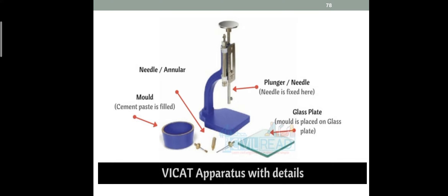In the glass plate, we mix the cement. The Vicat apparatus has a plunger — we use the needles for consistency test. You can see the scale on the Vicat apparatus which measures the depth of penetration. The machine height and scale allow us to read the penetration value accurately.